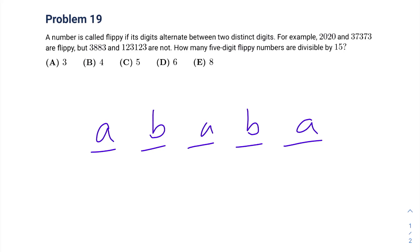Because they're digits, that means that A is greater than or equal to 1 and less than or equal to 9, and B is greater than or equal to 0 and less than or equal to 9. We are also told that this 5-digit flippy number is divisible by 15.